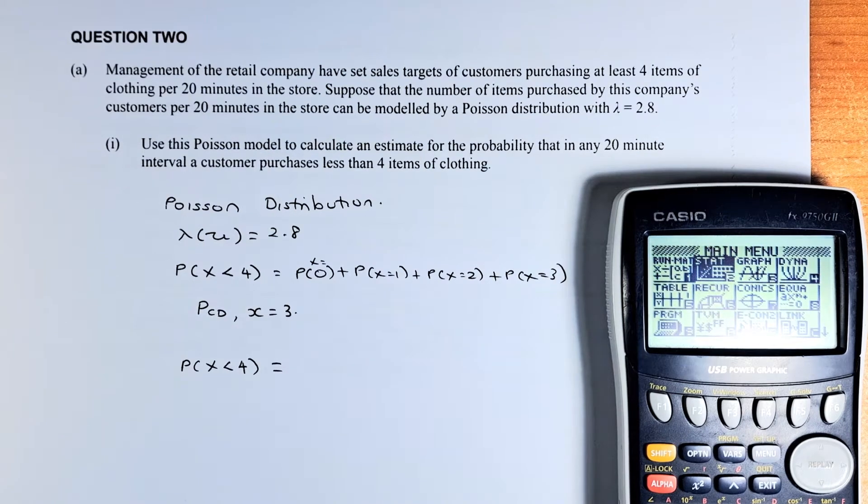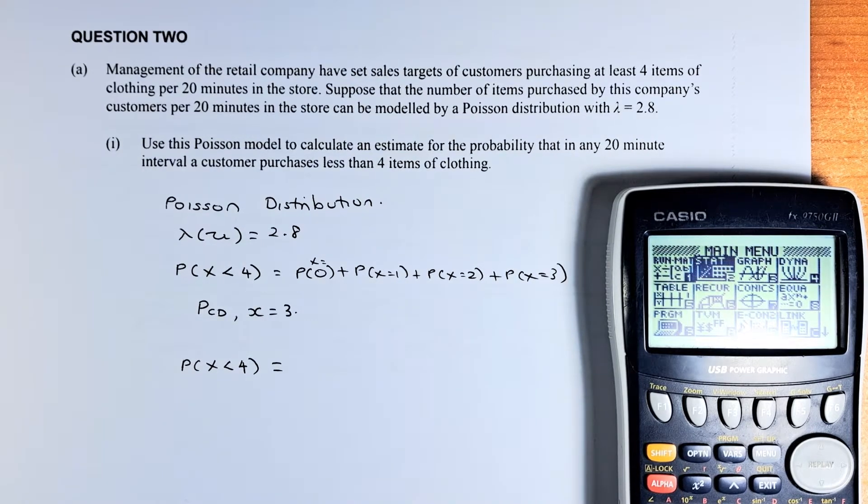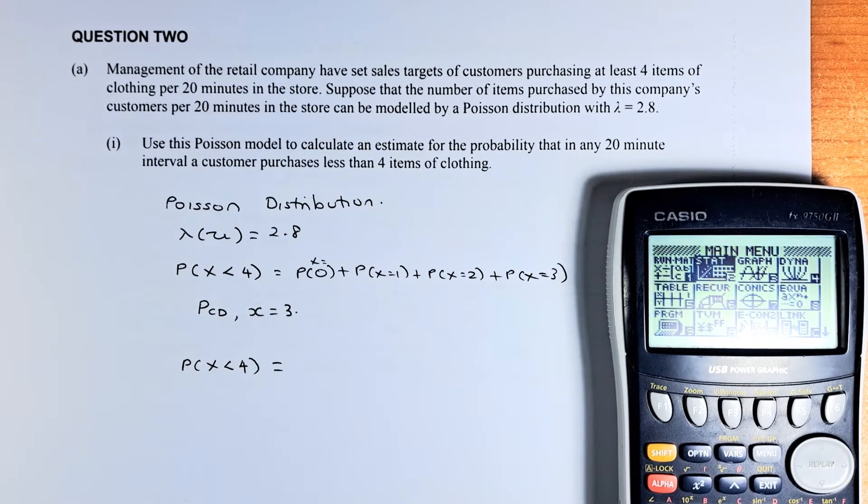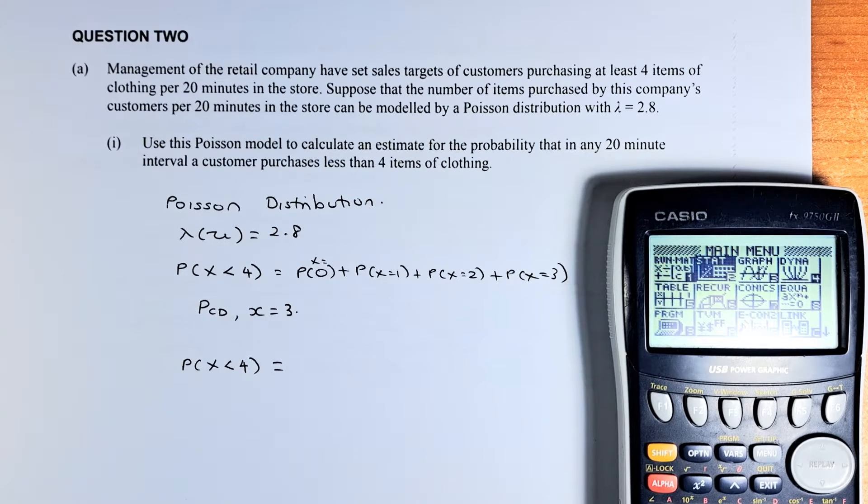Good day! In this video, we are going to try to do question 2A of the 2022 NCA Level 3 Statistics Paper for Poisson Distribution. This is a question on Poisson Distribution and without further ado, let's try to solve this.